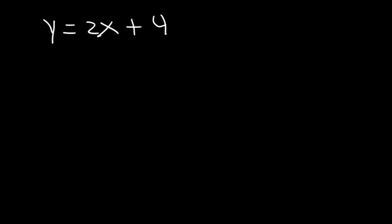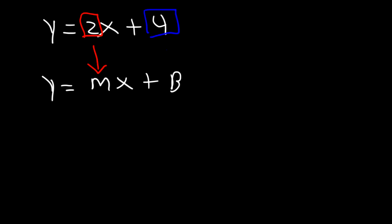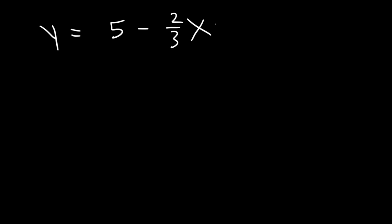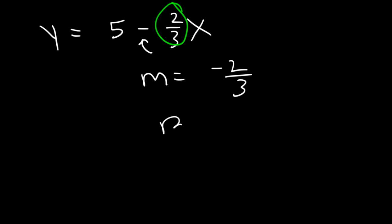Now let's say you're given a linear equation. This equation is in the form y equals mx plus b — slope-intercept form. The number in front of x is the slope, that's m. The number on the outside is b, the y-intercept. So try this one: y equals 5 minus 2/3 x. The slope is simply the number in front of x, so the slope is negative 2/3. The y-intercept is positive 5.